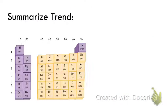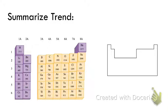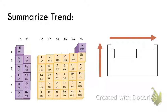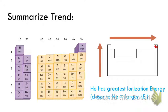Let's summarize this trend. I drew out my own little periodic table. As we move from left to right, ionization energy is increasing, so I draw an arrow pointing to the right. As we move down a group, ionization energy decreases, so our biggest ionization energies are at the top of any given group. Putting these arrows together, helium has our largest ionization energy. So the closer we get to He, the larger the IE gets.